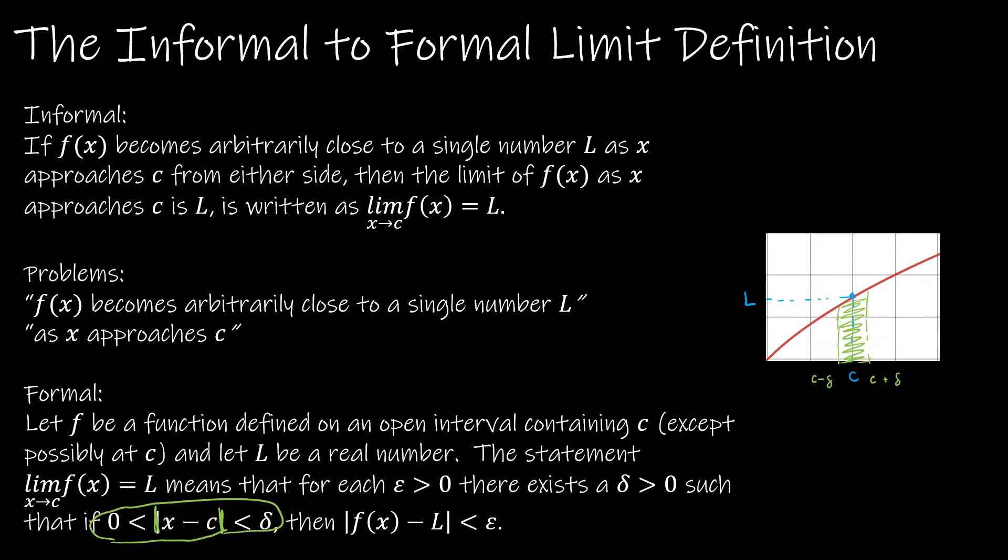So anywhere within delta on either side of c, then the limit, the function itself minus the limit, again that is in absolute value so that we can go on either side of L, we're saying the limit within epsilon, so this would be like L plus epsilon, and this would be L minus epsilon, that the limit is going to be in that neighborhood. So again, it's kind of like a radius. So this is what the formal definition says.